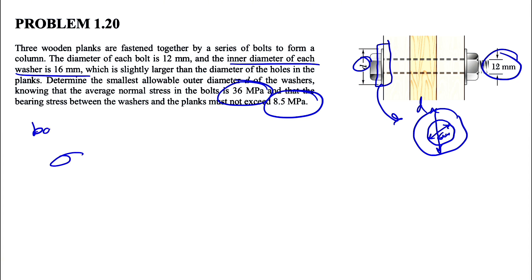So we can start with the average normal stress in the bolts. The average normal stress would be P over A, or the force over area. We know from the question this is equal to 3.6 megapascals or 3.6 times 10 to the 6 pascals, meaning we have to have the other side of the equation based on newtons and meters. The P here is unknown but we can find the area of the bolt. The area of the bolt is pi divided by 4 times the diameter of bolt squared.